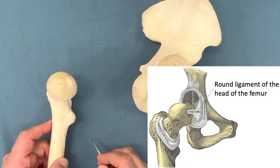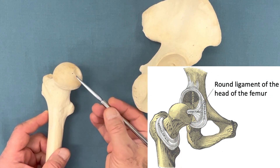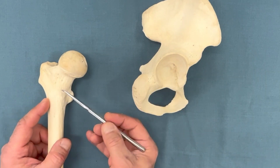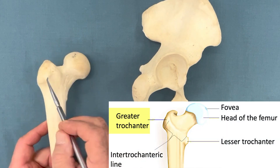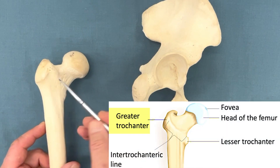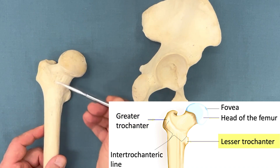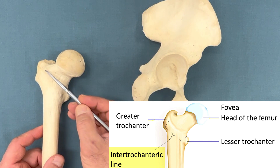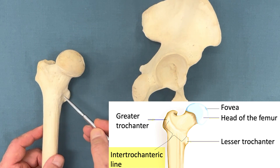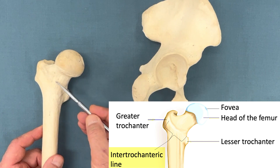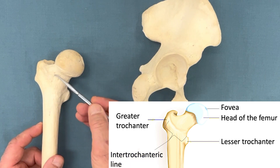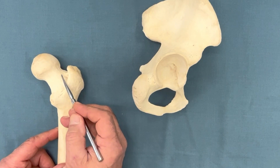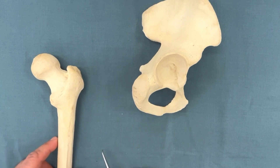The fovea gives attachment to the round ligament of the head of the femur. Now let's review the osteology of the trochanteric parts as well. This is the greater trochanter and that is the lesser trochanter. On the anterior side, these two are connected by the intertrochanteric line. The joint capsule attaches to the intertrochanteric line on this side, so the neck of the femur is inside the joint cavity on the anterior side.